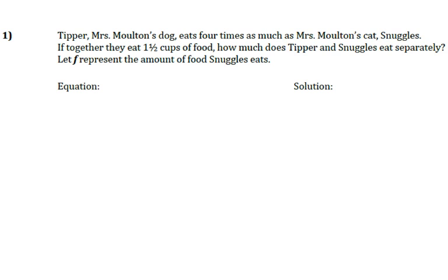So, what is the question? What are we trying to figure out? Let's go ahead and look back at the problem. In that second sentence, it ends in a question mark, so that's probably what we're looking for. It says, if together they eat one and one-half cups of food, how much does Tipper and Snuggles eat separately? So, we know how much Tipper eats and how much Snuggles eats. To answer this question, we need to actually write an equation, so we're going to go back to our problem and find important information.